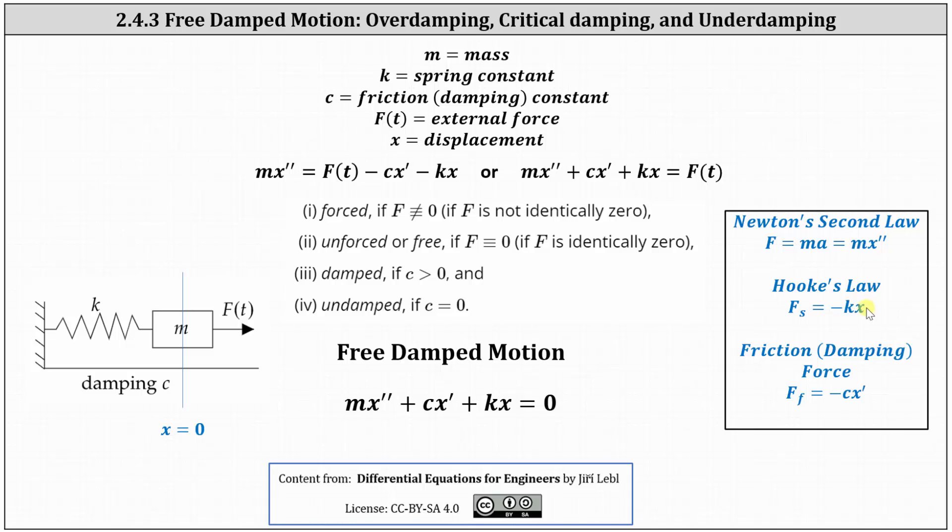If we isolate big F on the right, we have mx double prime plus cx prime plus kx equals big F of t. For free motion where F(t) equals zero and c is greater than zero, we have the differential equation for free damped motion: mx double prime plus cx prime plus kx equals zero.